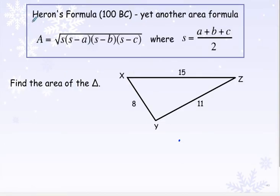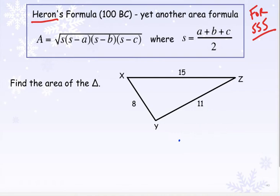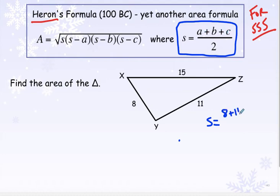Lastly, we have a new area formula called Heron's formula. This is when you know all three sides. Back in geometry, if you were trying to use one-half base times height, you'd run into an issue — like if you made 15 your base, the height would have to be perpendicular to the base, and it was pretty tricky to find. Heron's formula is really nice and easy. The first thing you do is find S by adding up your three sides — 8 plus 11 plus 15 — and dividing by 2. In this problem you get 17.